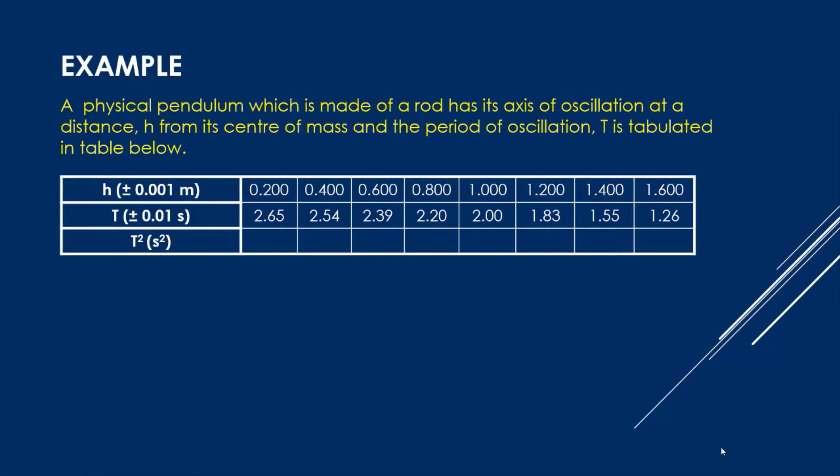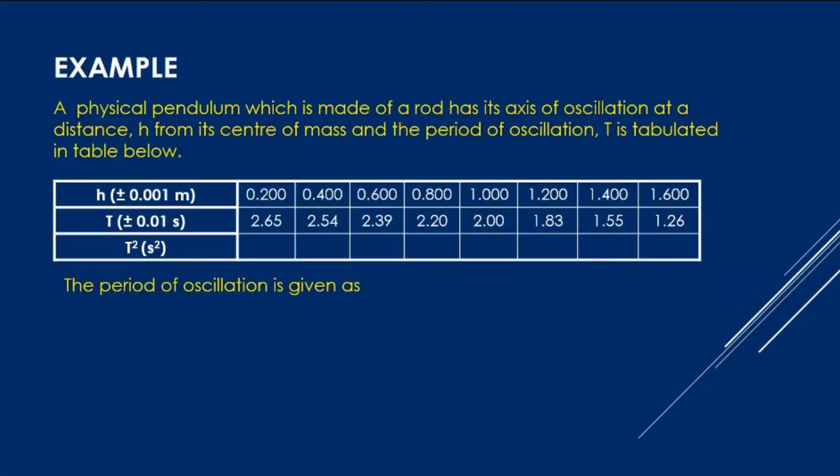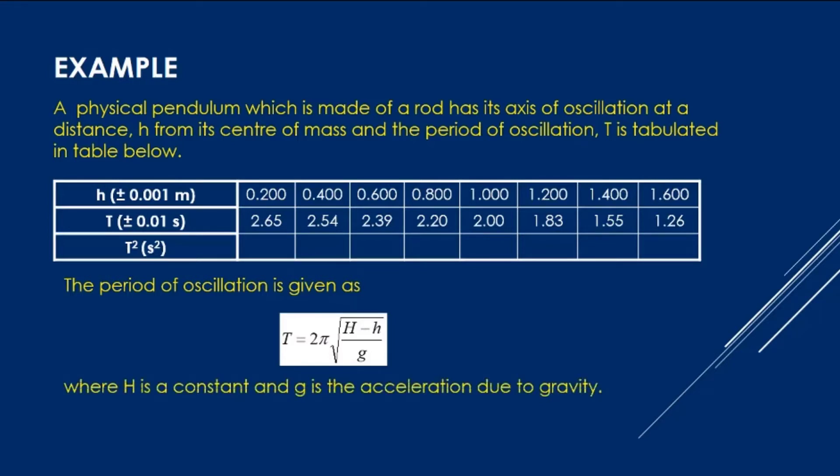Let's try one example. A physical pendulum which is made of a rod has its axis of oscillation at the distance h from its center of mass. And the period of oscillation T is tabulated in table below. The period of oscillation is given as T equals 2π square root H minus h divided by g, where H is a constant and g is the acceleration due to gravity.